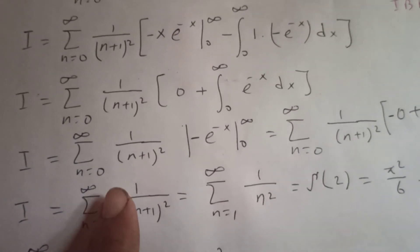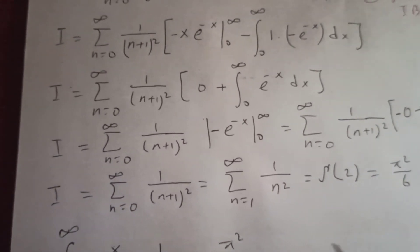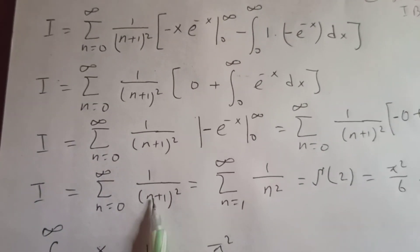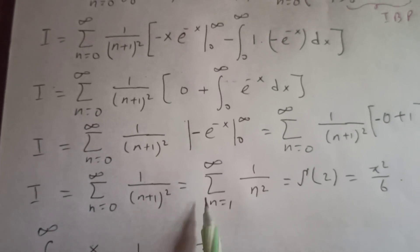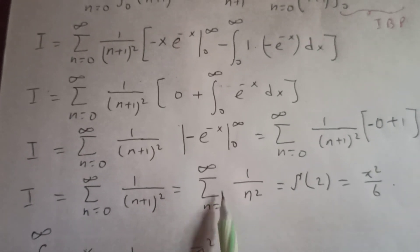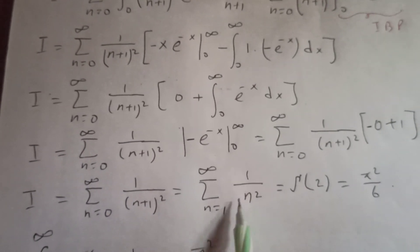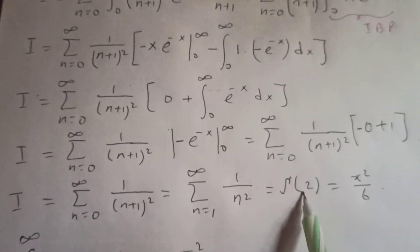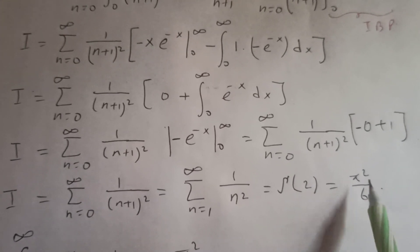This means if you plug in n=0 it starts from 1, and if n=1 it gives 1 over 4, and so on. We can rewrite this as the sum from n equal to 1 to infinity of 1 over n². Both expressions are the same — they both start from 1. This is nothing but the Riemann zeta function ζ(2), and ζ(2) equals π²/6.